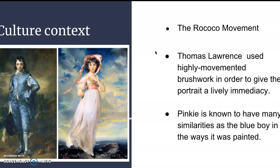The cultural context behind the painting is that it is known to be in the Rococo movement, an artistic period that emerged in France and spread throughout the world in the late 17th and 18th century. Thomas Lawrence uses highly dynamic brushwork in order to give the portrait a lively feel. In oil painting, you paint one surface, wait for it to dry, and then paint another layer, but you can also use certain strokes to create movement — that's how he works in her dress being flowed to the side, which causes her to look like she's moving.